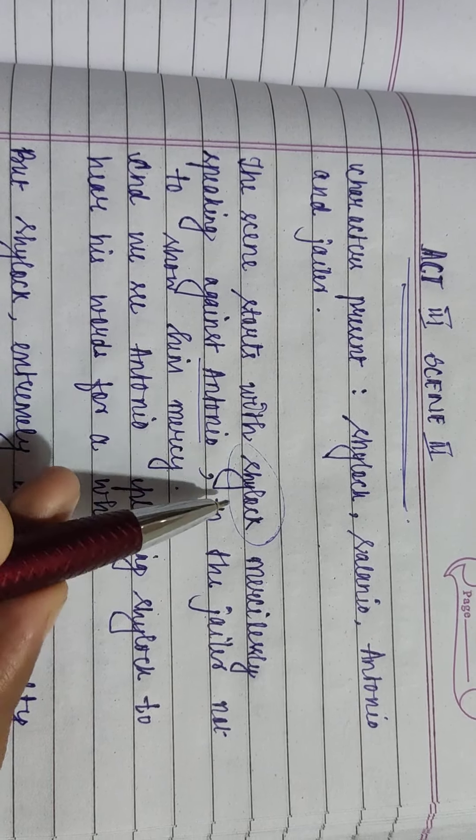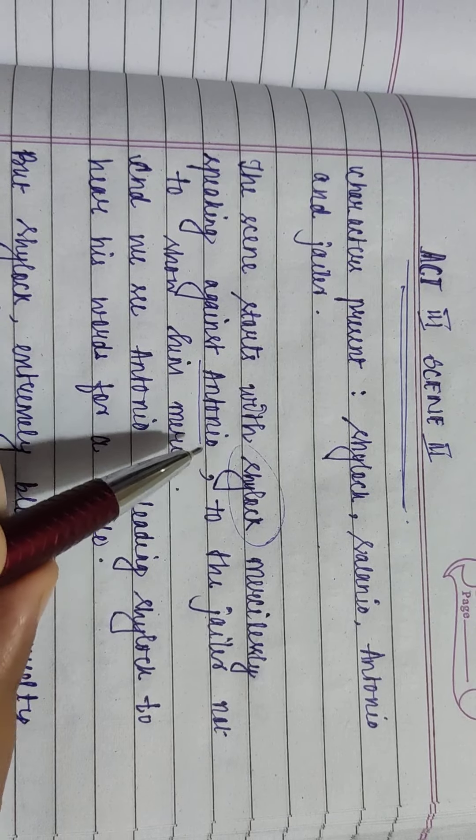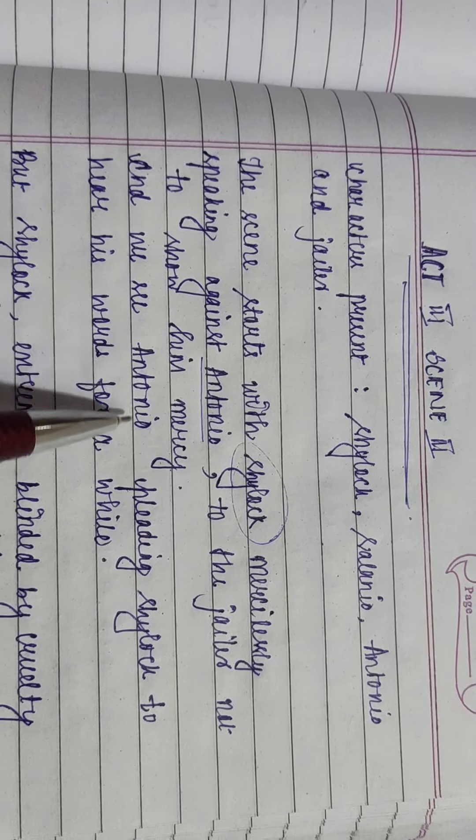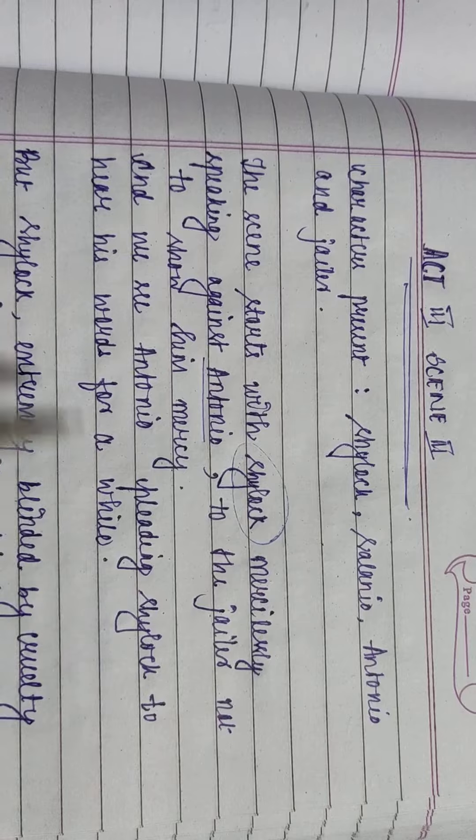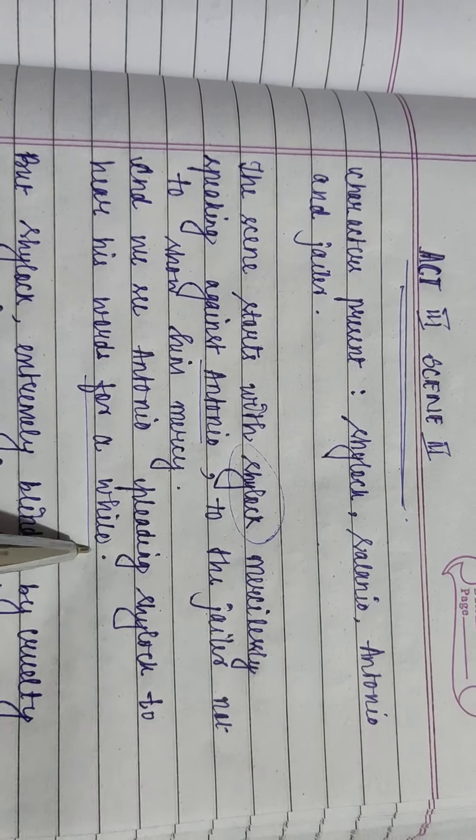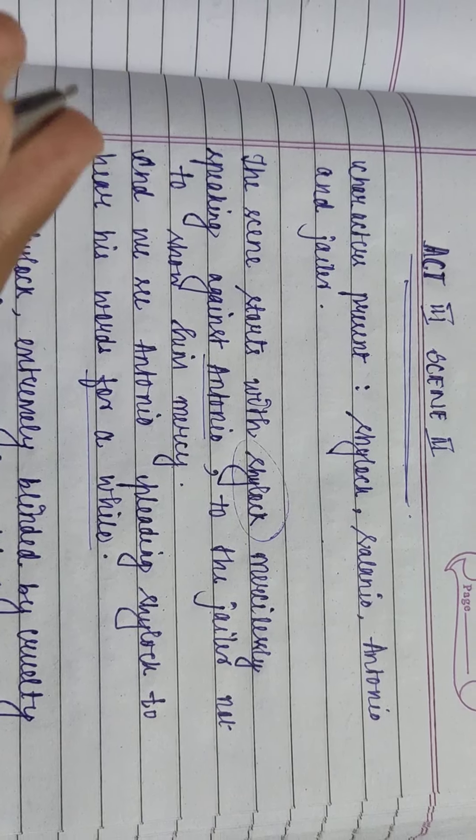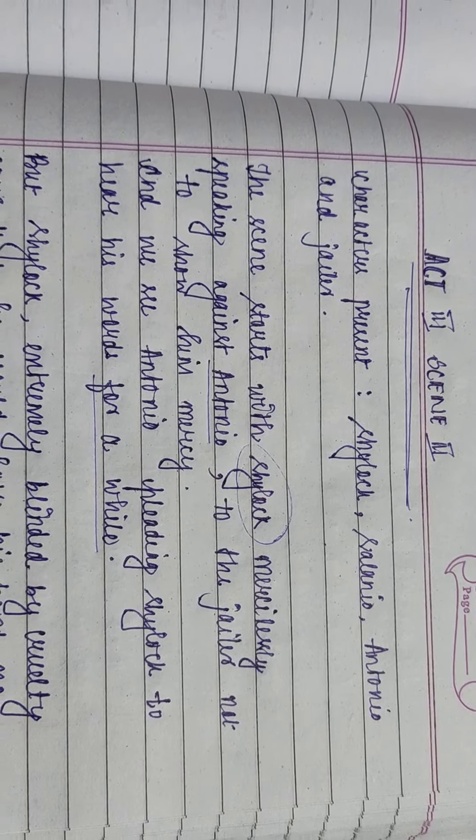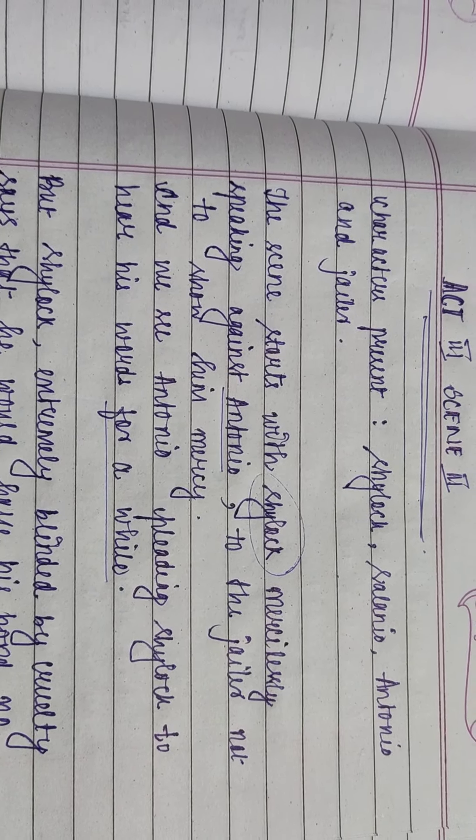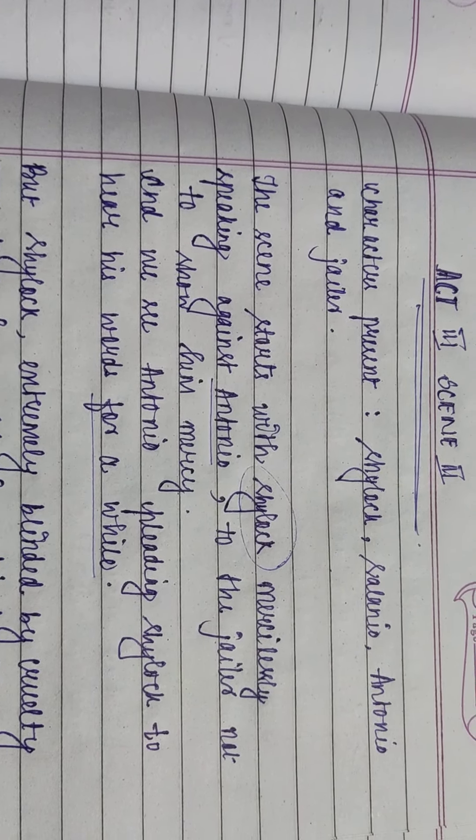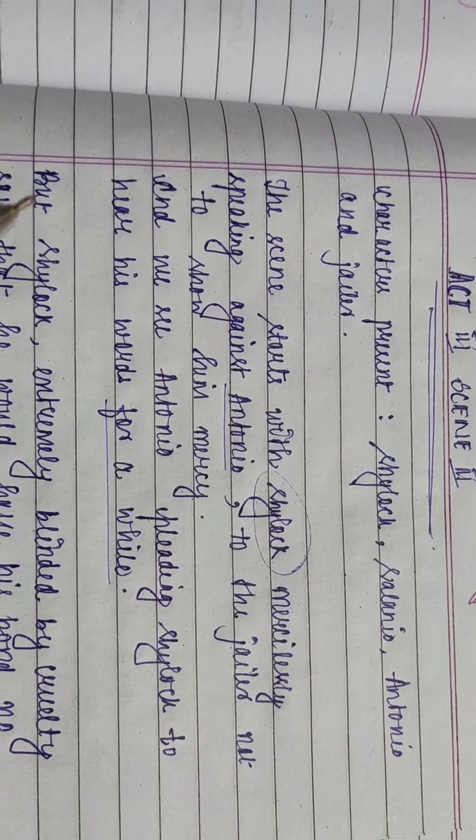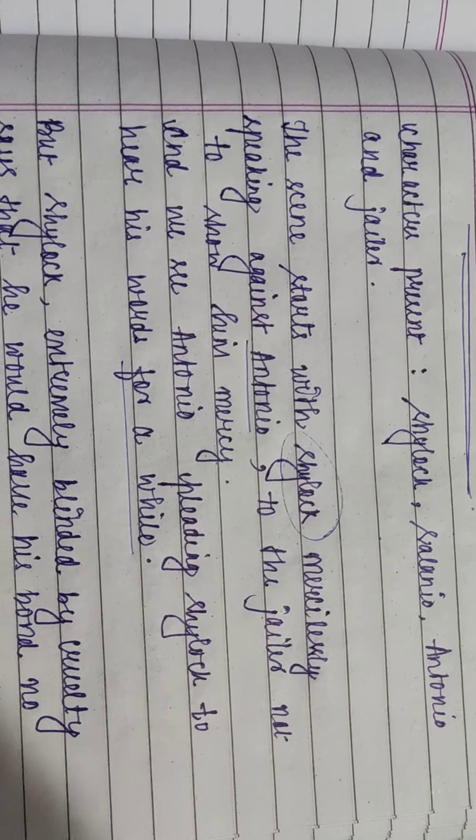Also he was fully ready to take revenge on Antonio. And we see that Antonio was pleading Shylock to hear his words for a while. We saw Antonio so many times asking Shylock to hear him for a minute, but Shylock, so much blinded by injustice, wasn't ready to even hear a word from him.